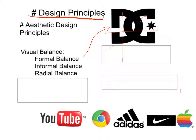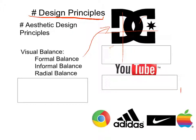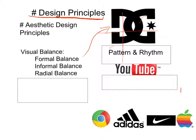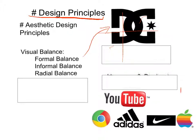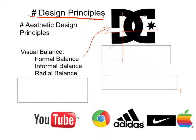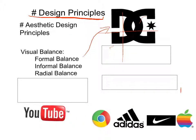As opposed to formal balance, let's look at something that has informal balance — for example, the YouTube logo. While the DC logo is formally balanced, the YouTube logo has no real symmetry. If you draw a line down the halfway point, both sides are completely different from each other, other than using the same font. This is an example of informal balance, or asymmetry.